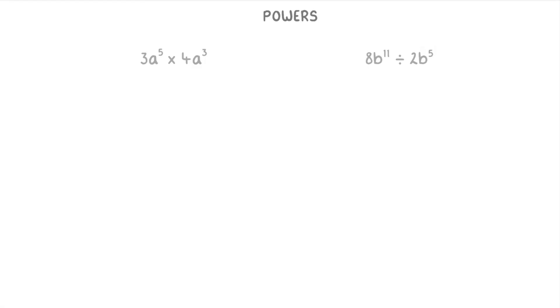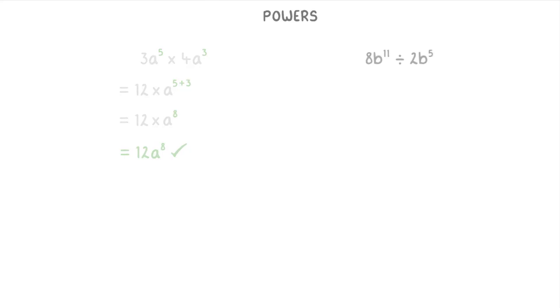One last thing to cover is that when you're doing questions that involve multiplying or dividing terms that have both numbers and letters, you want to think of the numbers and letters separately. Remember that the powers only apply to the letters. So for 3a to the power of five times 4a cubed, you do 3 times 4, which is 12, for the numbers, and times that by a to the power of five plus three, so a to the power of eight. That gives us an overall answer of 12a to the eight. Or for 8b to the power of 11 divided by 2b to the power of five, you do 8 divided by 2, which is 4, times b to the power of 11 minus 5, which is b to the power of 6. So your answer would be 4b to the power of 6.